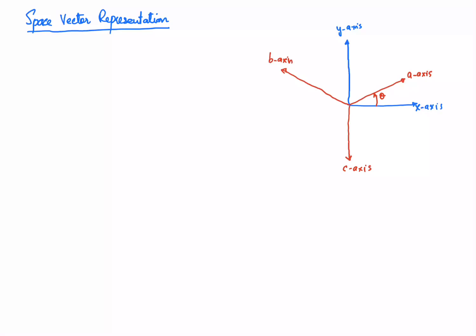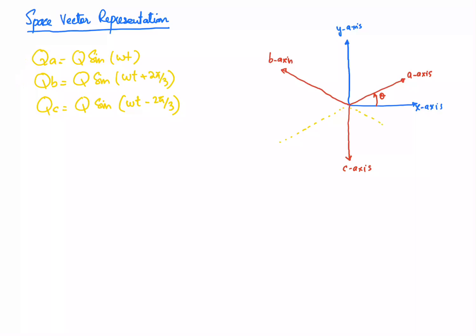We can consider any generic quantity — for example q — that will represent either voltage, current, or flux. So qa can be written as Q·sin(ωt), qb as Q·sin(ωt + 2π/3), and qc as Q·sin(ωt − 2π/3) or equivalently Q·sin(ωt + 4π/3). Phase A varies along the A-axis, phase B along the B-axis, and phase C along the C-axis.